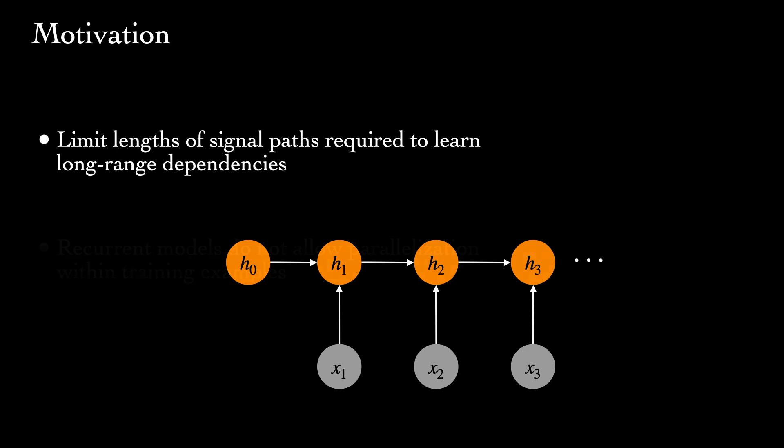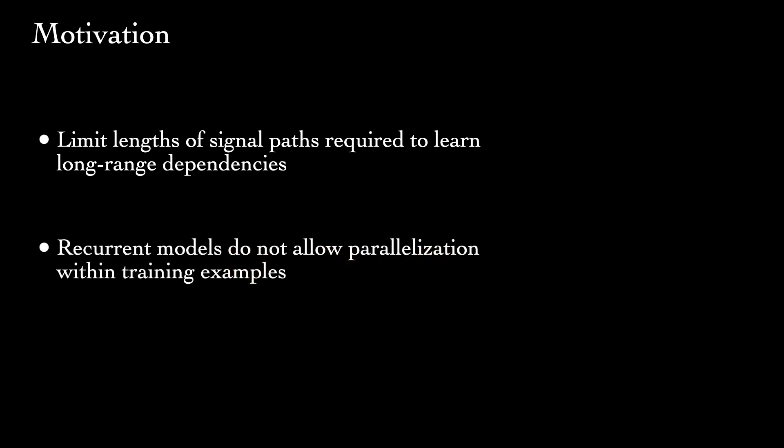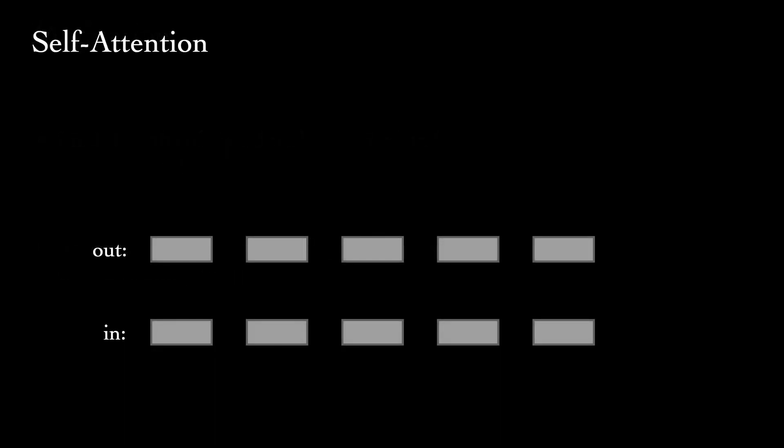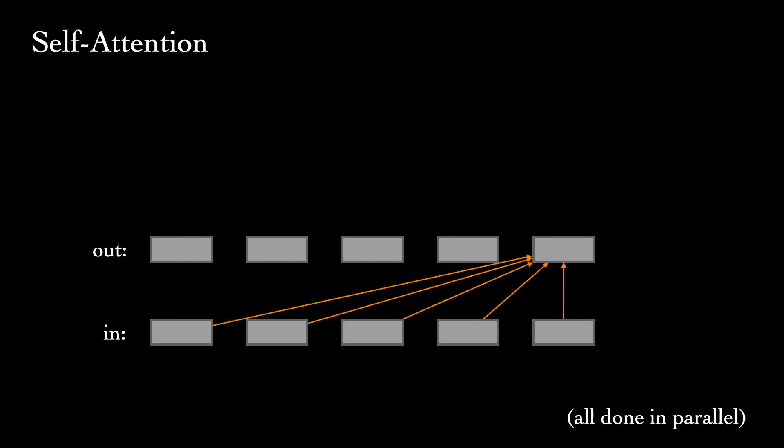Another motivation is that, for long sequences, we'd ideally like to parallelize computation within training examples. In minibatch training, we already parallelize across examples, but memory limitations make parallelizing within examples desirable for extra speedup. Recurrent models prevent this. Convolutional sequence models can alleviate this issue, but still face the problem of distance-dependent path lengths. Transformers allow for more parallelization than recurrent models, while also handling long-range dependencies. They leverage what's called self-attention to compute updated representations for each sequence element in parallel.